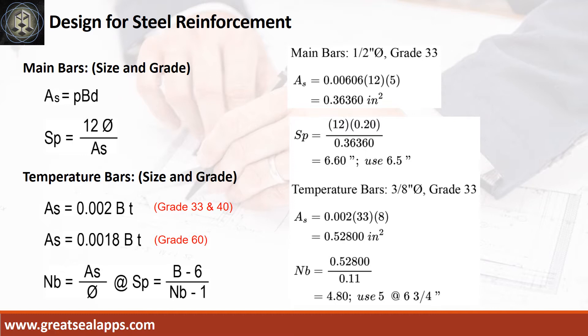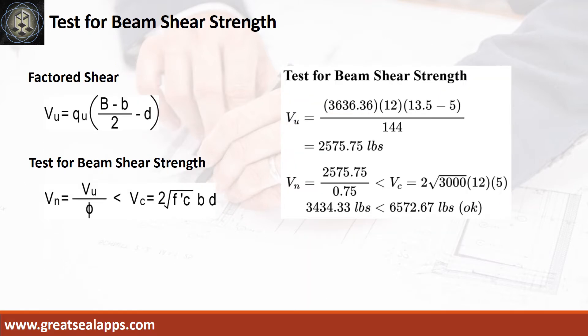The area of steel for temperature bars is 0.528 square inch, and the number of bars for 3/8-inch diameter is 5. The maximum shear force is 2,575.75 pounds, and the nominal shear force is 3,434.33 pounds less than 6,572.67 pounds.